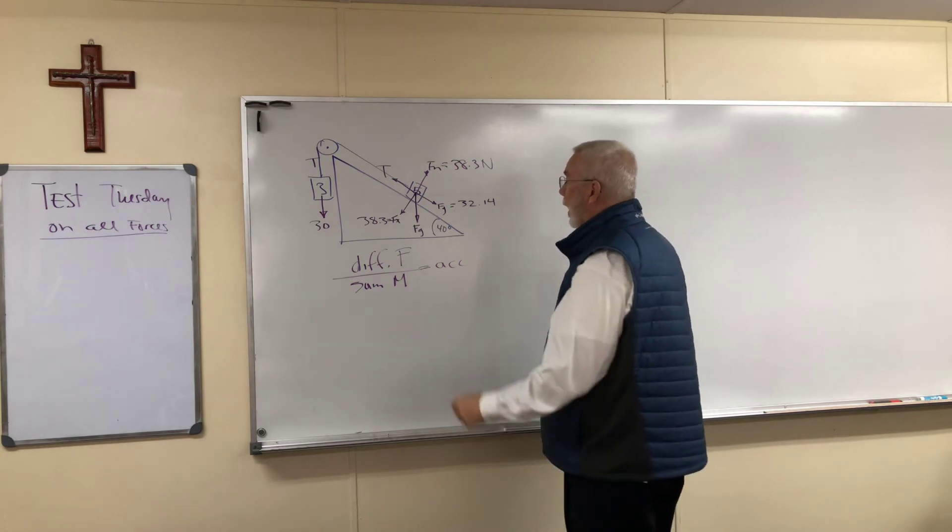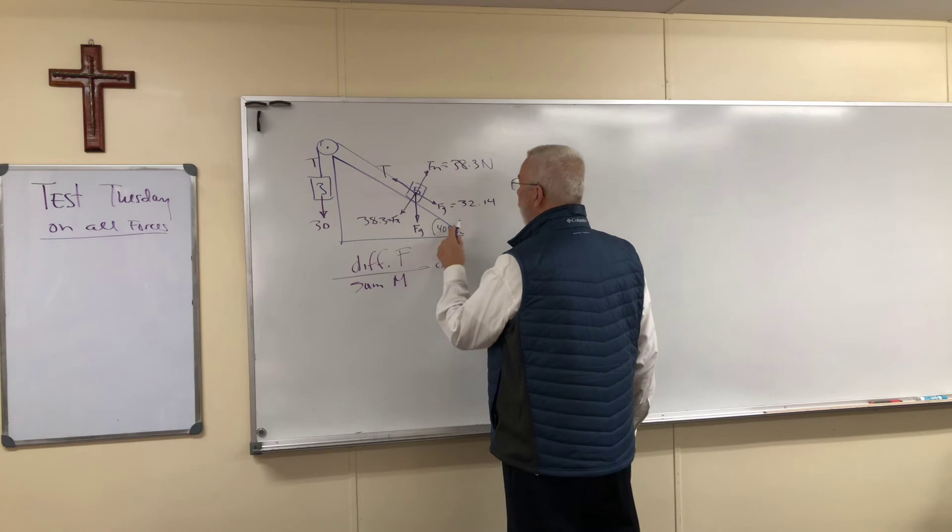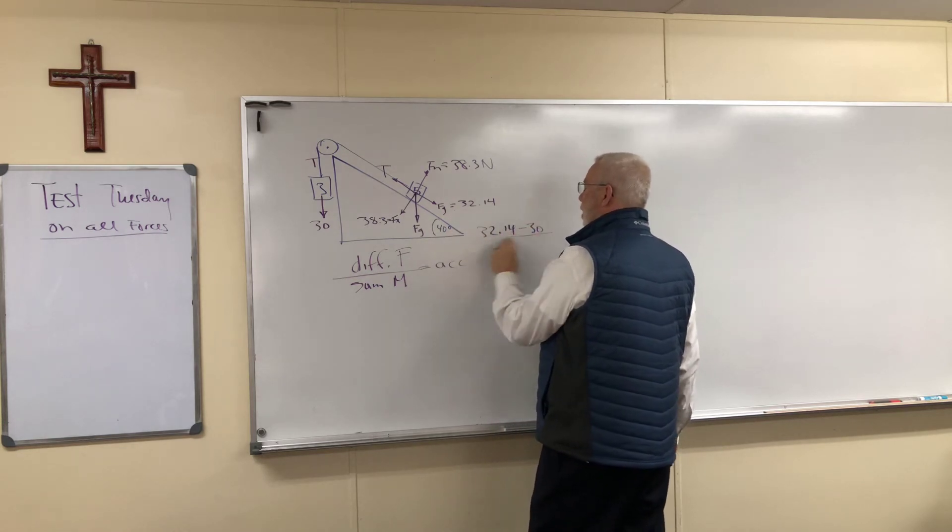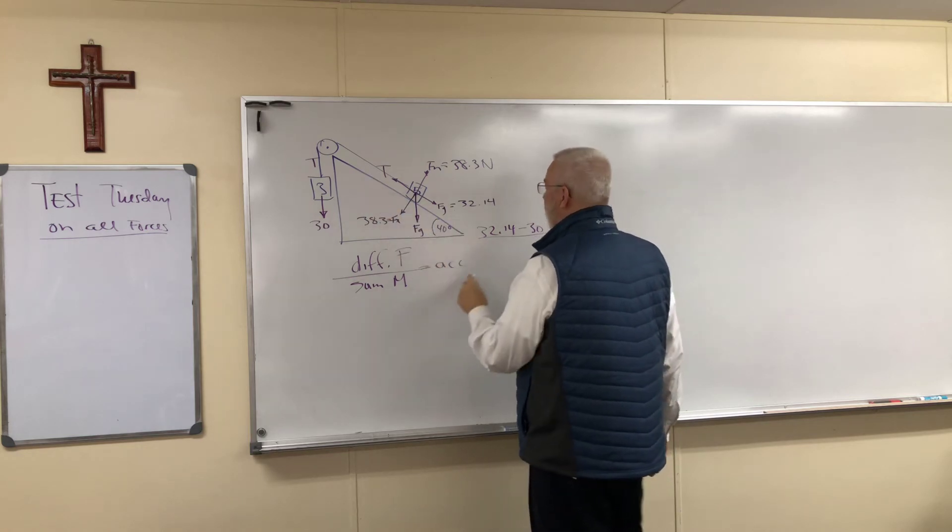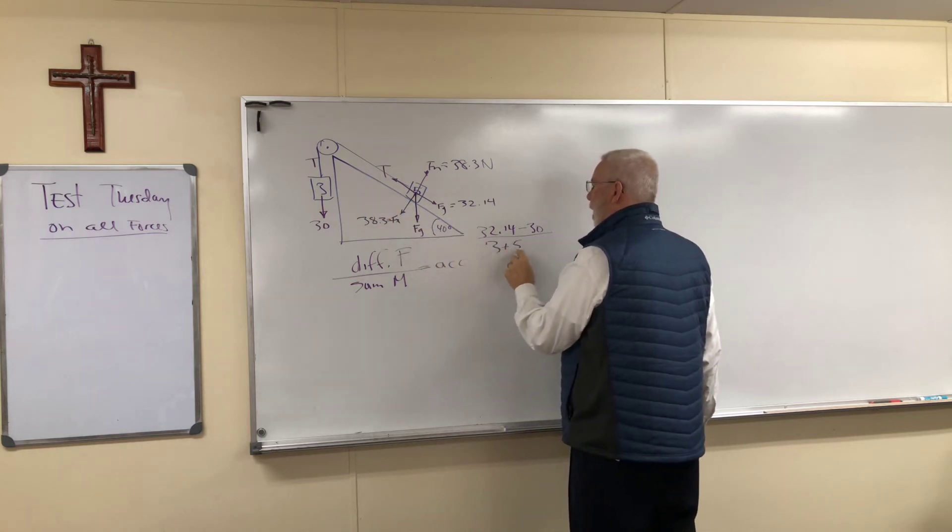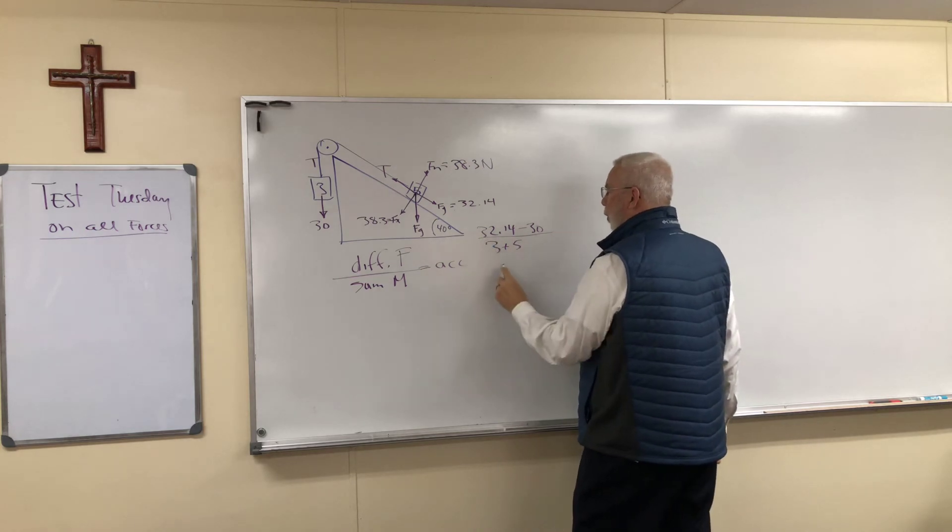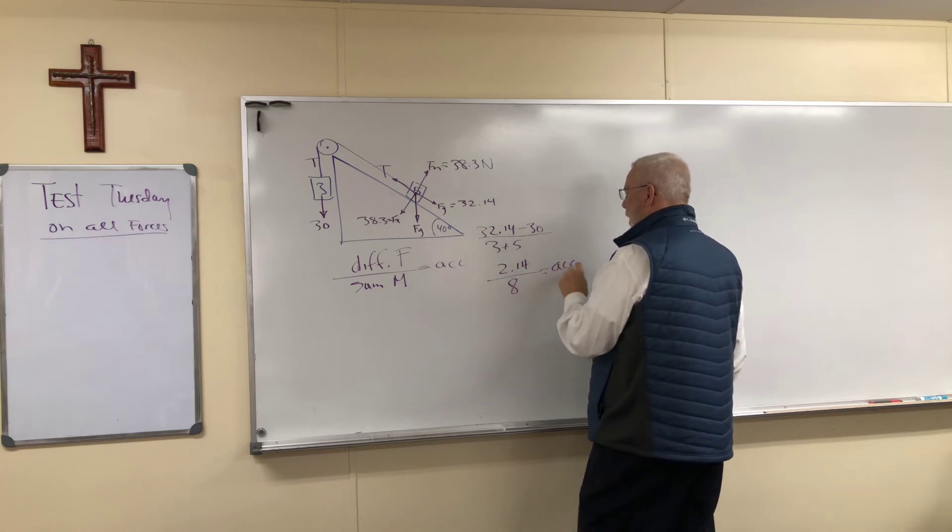So we have the difference of the two forces. Well that's going to be 32.14 minus 30 over the sum of the masses which is 3 plus 5 which is 8. So we've got the difference of the forces is going to be 2.14 over 8 equals the acceleration.